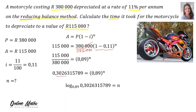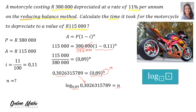Here's the conversion. You write log. The base of the exponent will also be the base of the logarithm. This whole number will stand with the log, equals, and then the exponent becomes the subject of the formula. Enter your special button on your calculator — at the base you insert 0.89, and in the other button you slot in 0.302. Press equals and you find n is 10.2565.